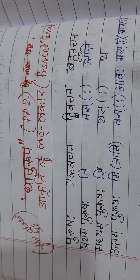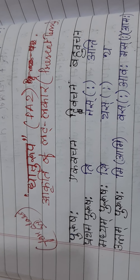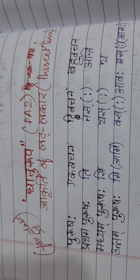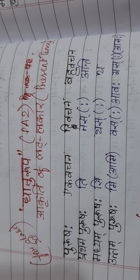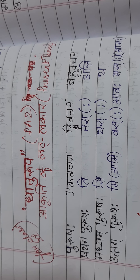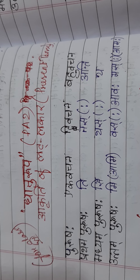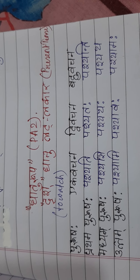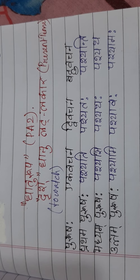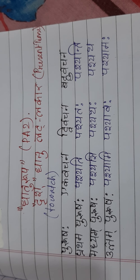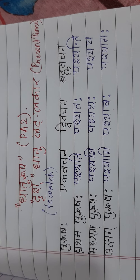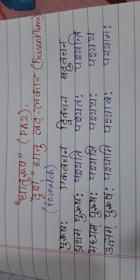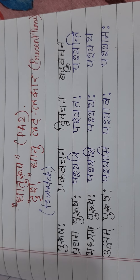Let's move to the Dhatu. After putting the Dhatu, we will see what changes occur. For your PA2 exam, you have Dhrish Dhatu. Dhrish Dhatu Lutlokar — Dhrish Dhatu means 'to watch.' Lutlokar means the present tense of Dhrish Dhatu.